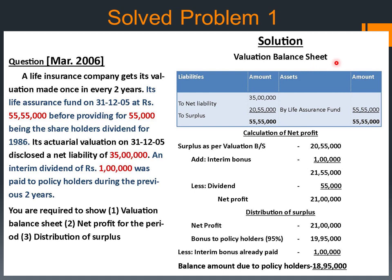First, we can prepare the valuation balance sheet. In the credit side, by life insurance fund — given in the question — that is Rs 55,55,000. In the debit side, to net liability — the fair value of insurance liability as determined by the actuarial valuation — also given in the question — that is Rs 35,00,000. So the balance is on the debit side, which represents the surplus of the insurance company, that is Rs 20,55,000.